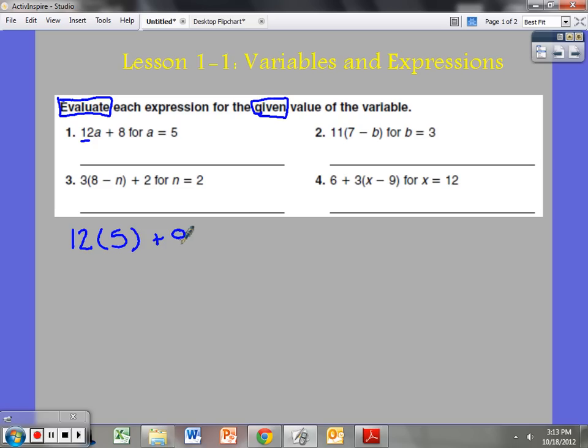Now we must remember PEMDAS, the order of operations: parentheses, exponents, multiplication and division, addition and subtraction. No parentheses or exponents. Now I have multiplication and division. I go 12 times 5 is 60. I say 60 and I bring down what I did not use. 60 plus 8, that gives me 68.